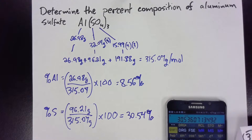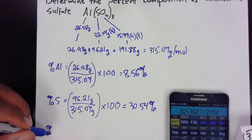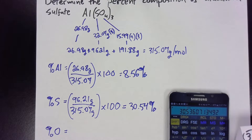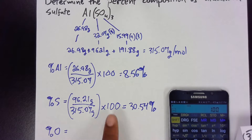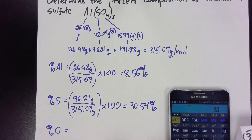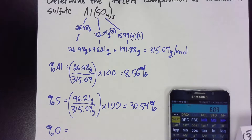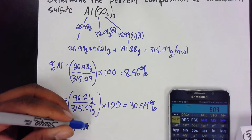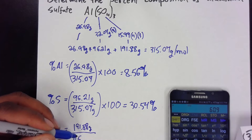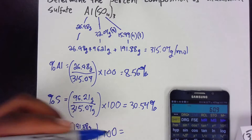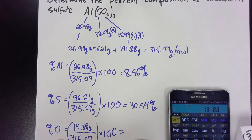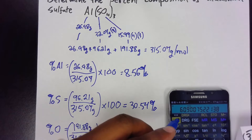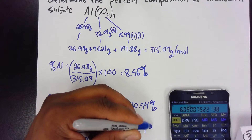Now for percent oxygen — since all percents must add up to 100, I can do 100 minus 30.54 minus 8.56, and what's left over is oxygen. That gives 60.9 percent oxygen. But let's verify the long way: 191.88 divided by 315.07 times 100. Let's see what we get — and we're looking for 60.9.